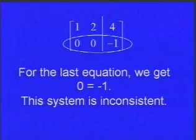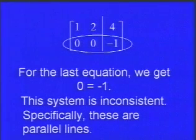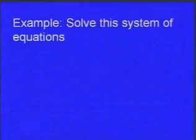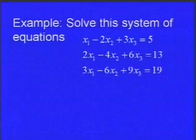That 2x2 was easy to spot. Let's look at one that won't be as obvious. We have x1 minus 2x2 plus 3x3 equals 5, 2x1 minus 4x2 plus 6x3 equals 13, and 3x1 minus 6x2 plus 9x3 equals 19.